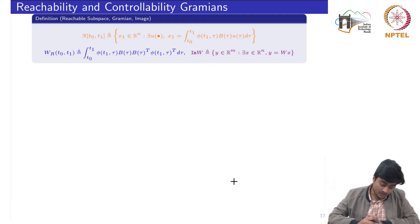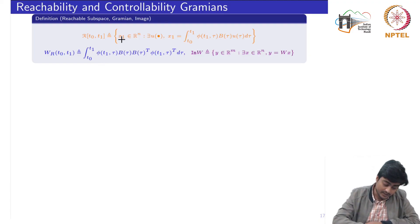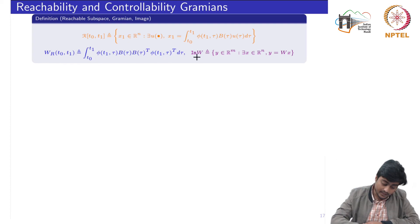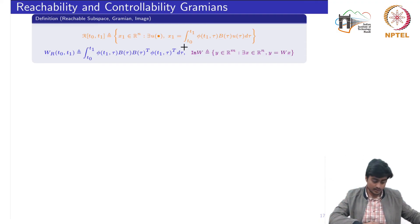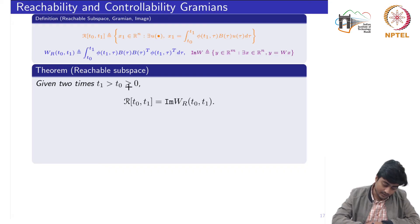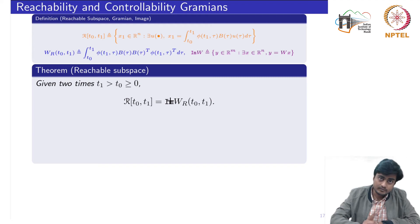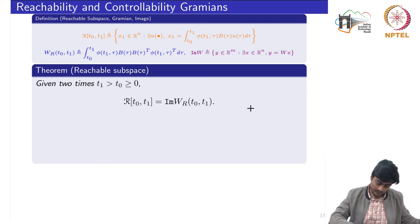Before stating the results, let's recall three important items: the reachability subspace is the set of x1 for which there exists a control u such that x1 is reachable from the origin; the reachability Gramian W_R is defined by its integral formula; and the image of any matrix W is defined as that set. The key result is: given t1 > t0 ≥ 0, the reachability subspace from t0 to t1 equals the image of the reachability Gramian W_R.